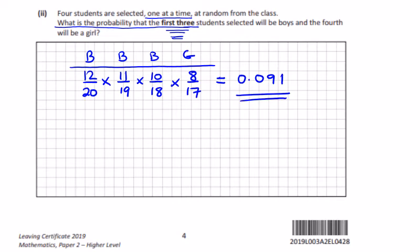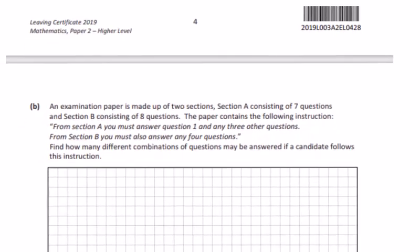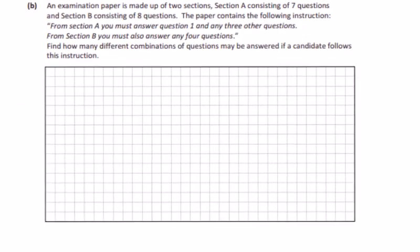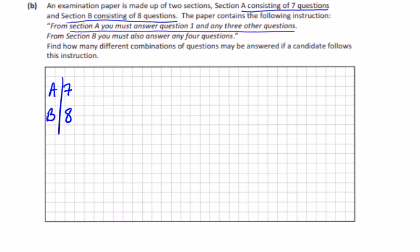Okay, the last part of this question: examination paper, two sections. Section A has seven questions, Section B has eight questions. So A has seven and B has eight. Jot down what you're given. The paper contains the following instruction: from Section A, you must answer one and any three others. One plus three others.